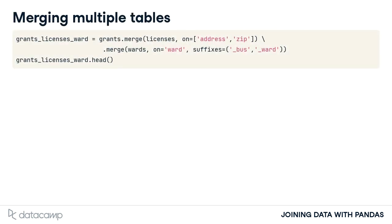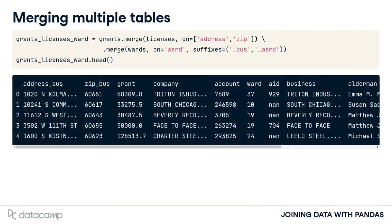We can now extend this example to a third table. First, we merge the grants table with the wards table on the ward column again, adding suffixes to the repeating column names. Note that we are using Python's backslash line continuation method to add the second merge on the next line. Python will read this as just one line of code. Without this, Python will throw a syntax error since it will parse it as two separate lines of code, so don't forget your backslash. Now our output table has information about grants, businesses, and wards. We can now complete our analysis.